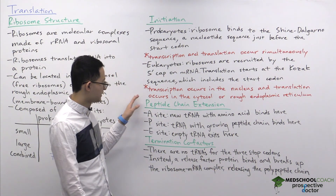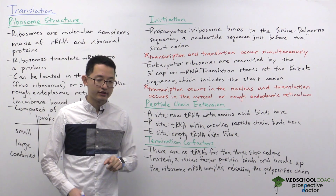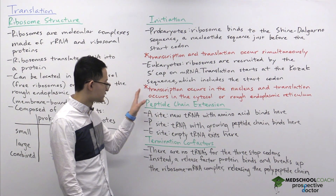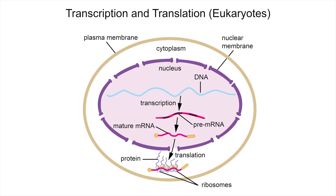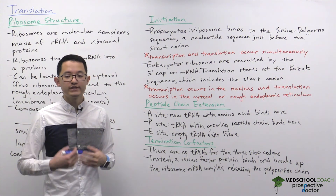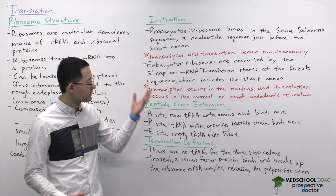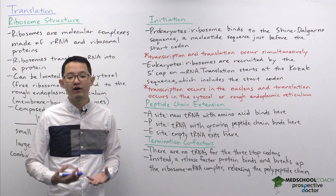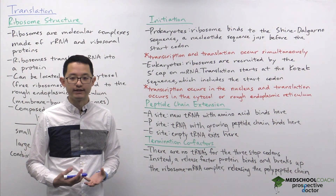For eukaryotes, transcription and translation do not occur simultaneously. Transcription and all transcriptional processing occurs in the nucleus, while translation occurs in the cytosol or on the rough endoplasmic reticulum. Once initiation has begun, the start codon AUG recruits a tRNA with methionine on it.